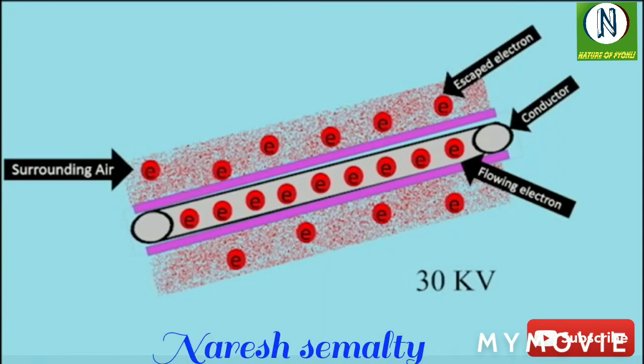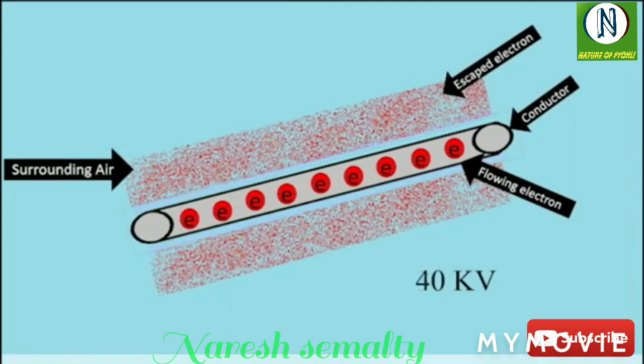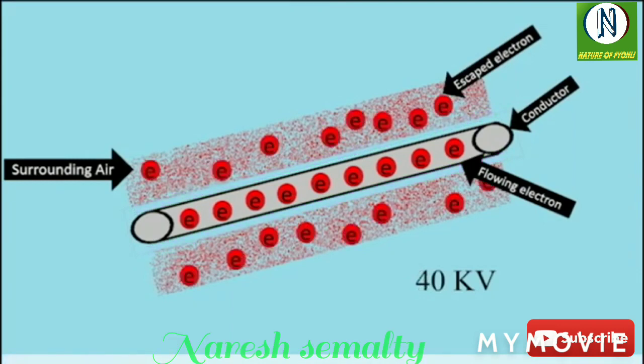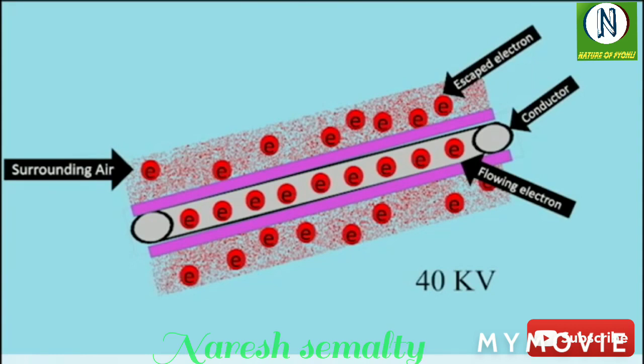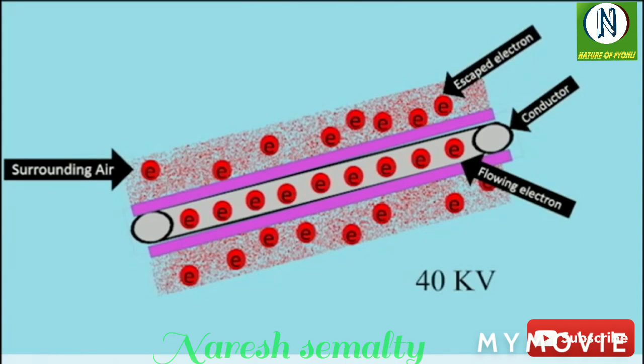If the voltage across the line conductor is still increased, the glow becomes more and more intense along with hissing noise, inducing very high power loss into the system.